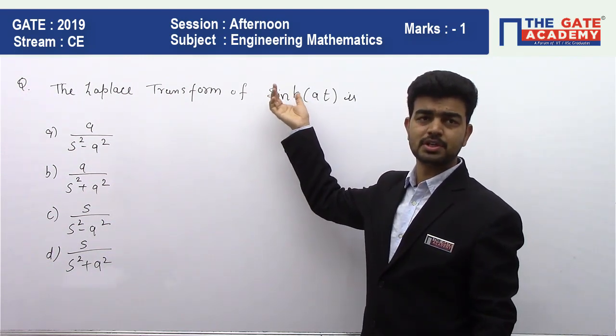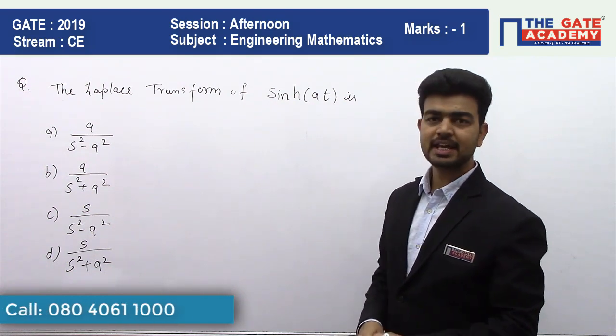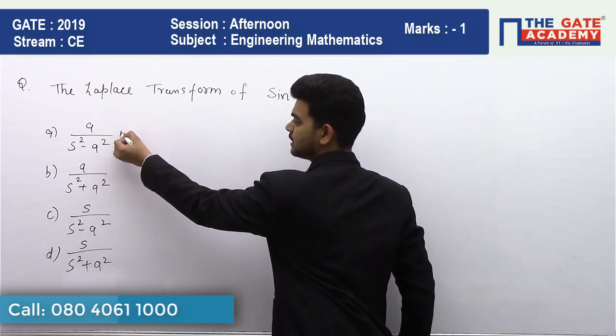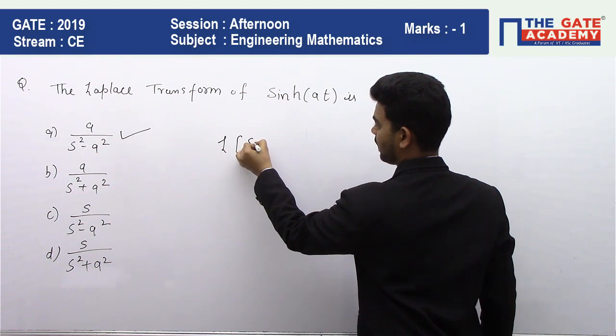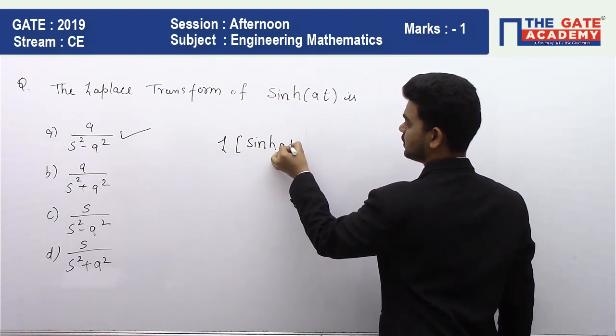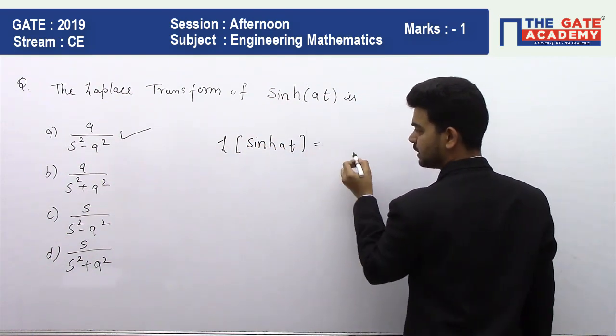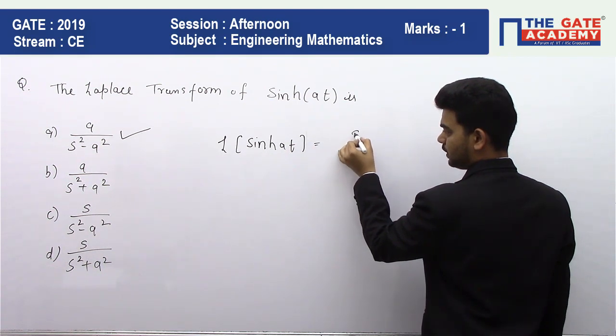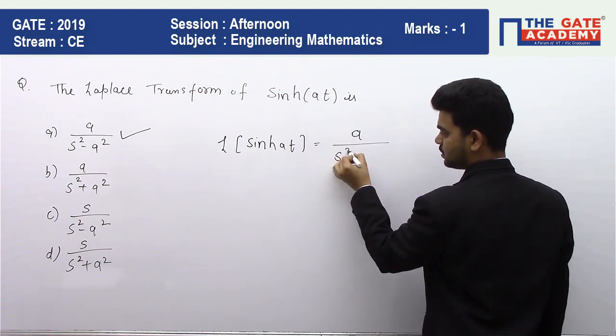The correct answer is A because we know the Laplace of sinh(at) - it is a formula we studied - a divided by s squared minus a squared.